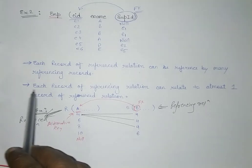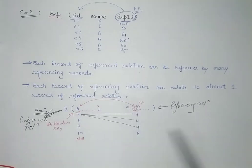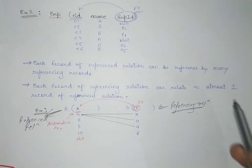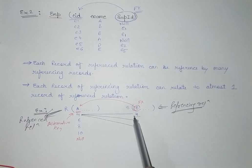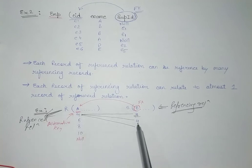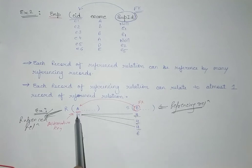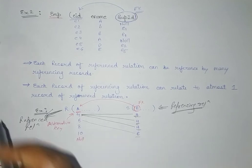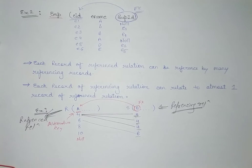The next important point is that each record of the referencing relation can relate to at most one record of the referenced relation. You can see that the record 4 in B is referencing at most one record in A. Similarly, each value — 4, 4, 6 — in B is referencing exactly one record in A. So this is the meaning of these two points.